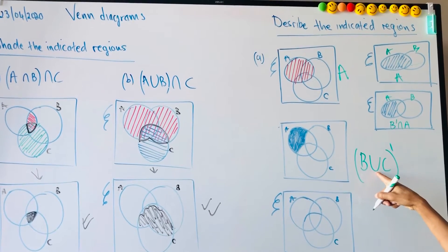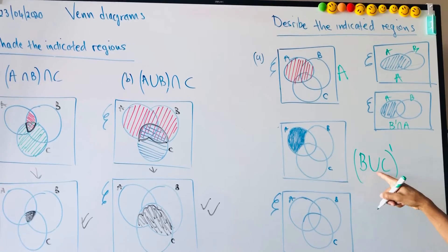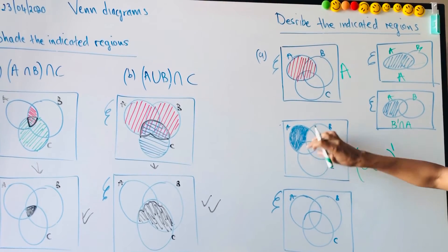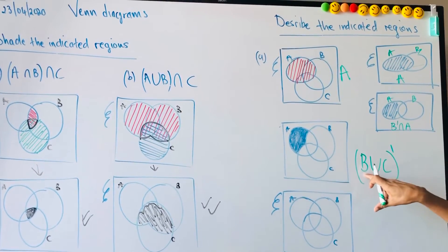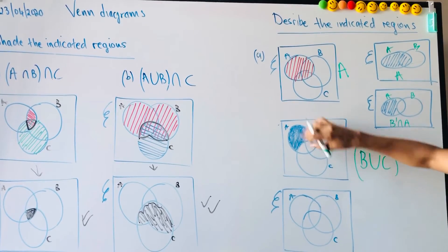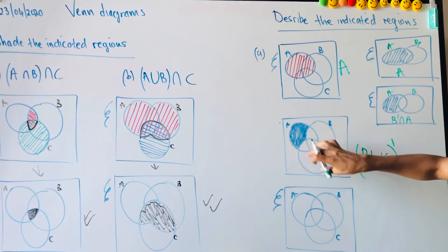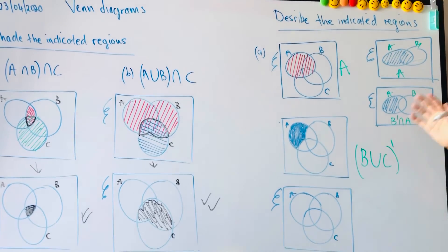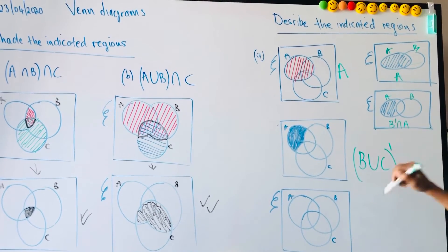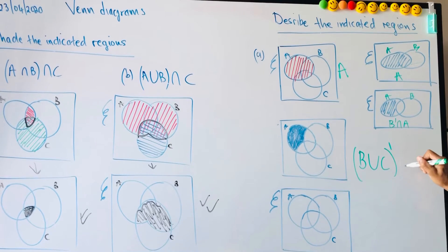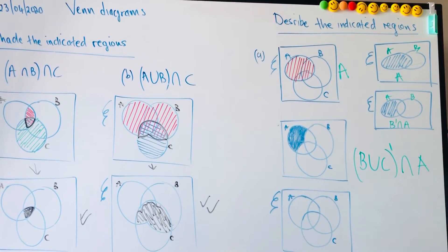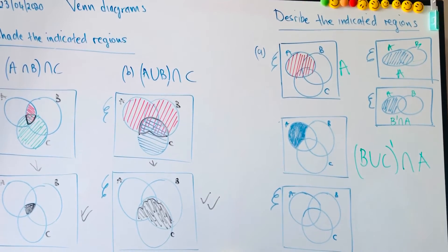It's union — sorry — not intersection. It's union because all of B and all of C: I'm outside B and C, but then I'm meeting with A there. So it's A intersected with the complement of B union C.